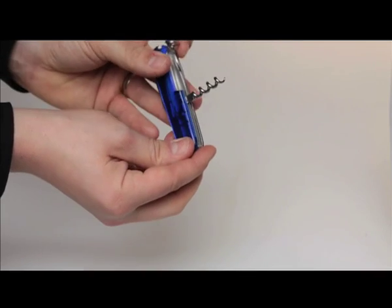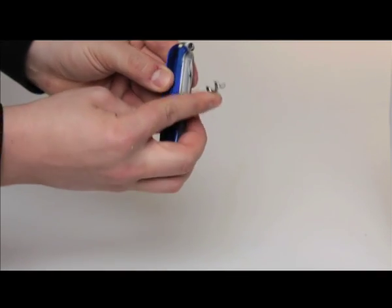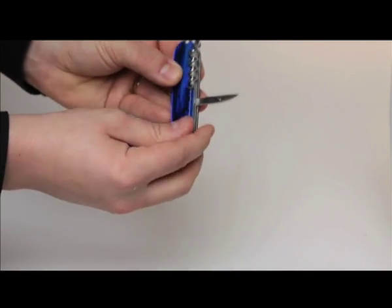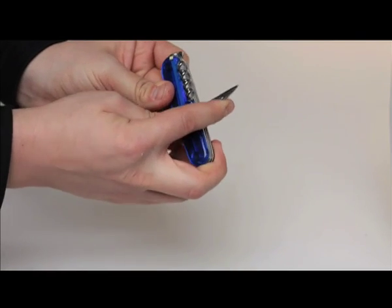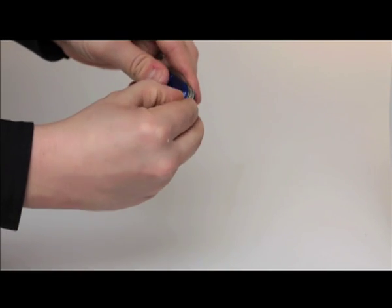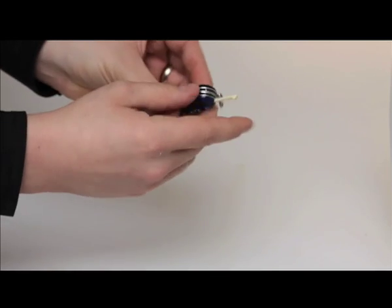Back here we have the corkscrew, which is essential for all that red wine that will help you sleep on the trains. We have a punch which I've never used that tool but I'm sure you'll find a use for it one day. Here we have a toothpick,